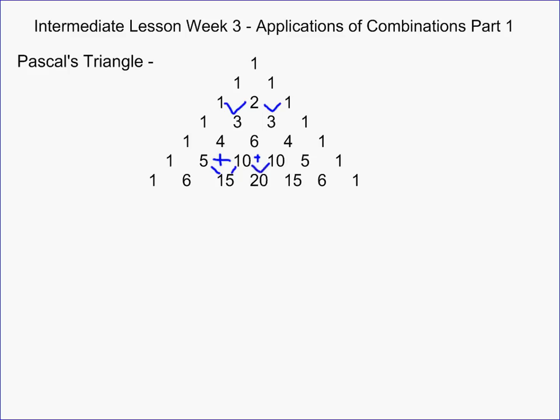Pascal's Triangle has lots of uses, but what we know is that it's related to combinations. If we take row 4 — we call it row 4 because they all start with 1s, and then it goes 1, 2, 3, 4, 5, 6 across — row 4 actually has 5 entries, so we're going to call the first entry out here the 0 entry. So the 4 would be the first entry, the 6 would be the second, the other 4 would be the third entry, and the last would be the fourth entry.